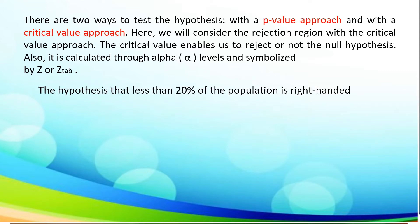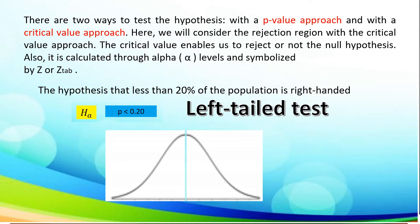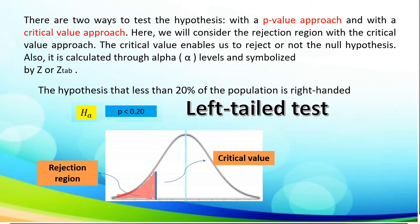Let us use again the given statement: the hypothesis that less than 20% of the population is right-handed. Given the alternative hypothesis P is less than 0.20, which falls under left-tailed test. To illustrate the given, we are going to write the critical value on the left-tailed test, which shows the critical value and shaded rejection region.